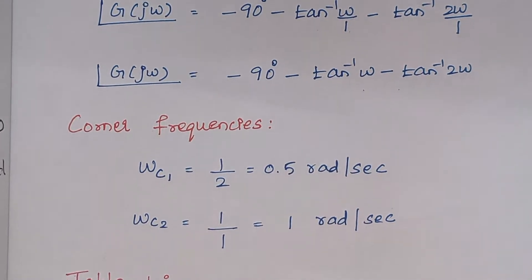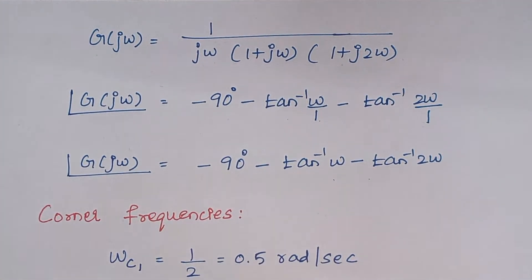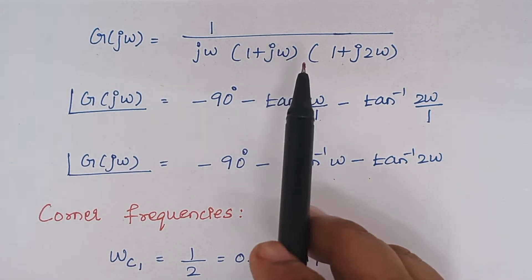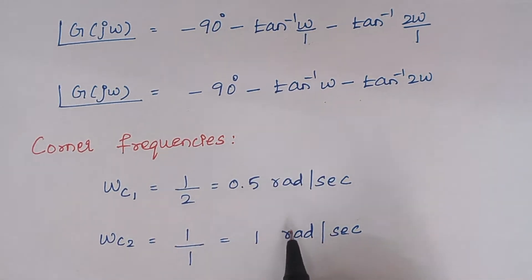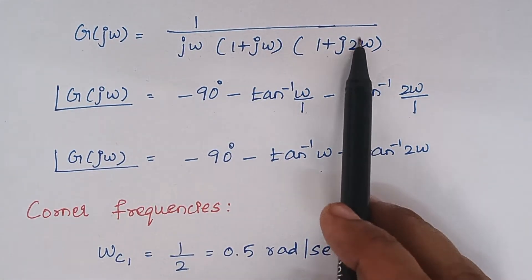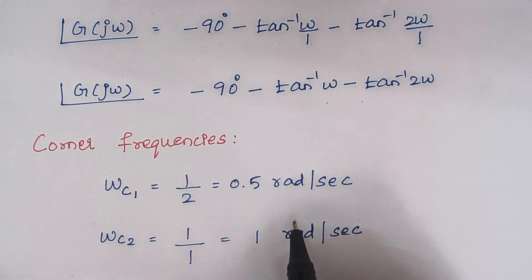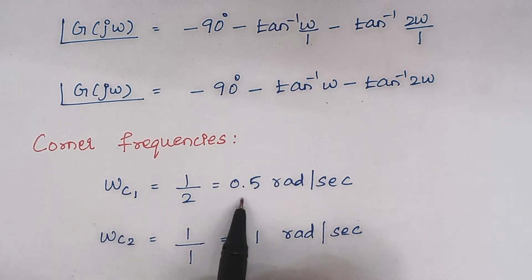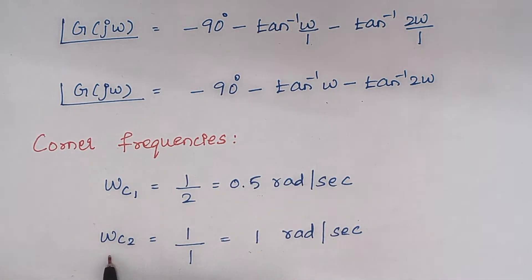The next thing is finding corner frequencies. We take the reciprocal of the coefficient of S or ω. The coefficient of ω is 1, so 1 by 1 gives 1 radian per second — that is the second corner frequency. And 1 by the coefficient 2 gives 0.5 radian per second. Corner frequencies must be named in ascending order: the least value 0.5 is ωc1 and the next highest value 1 is ωc2.